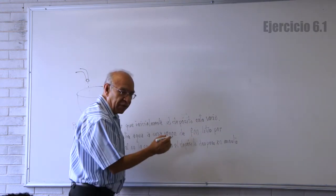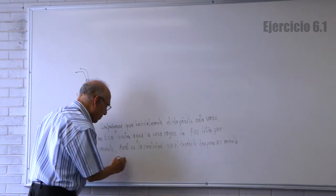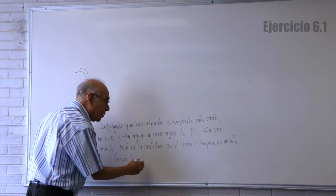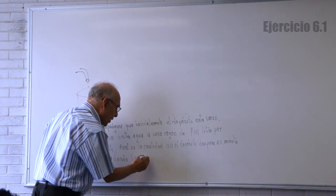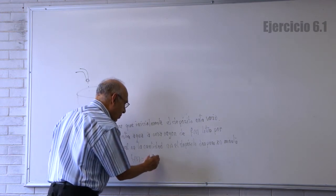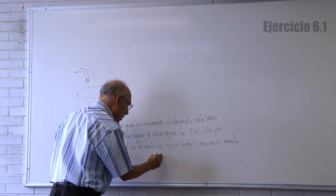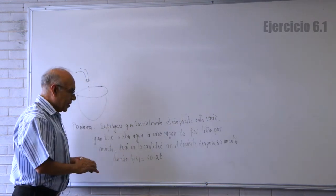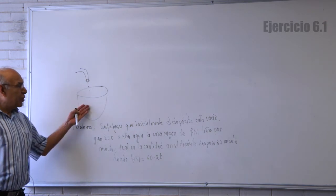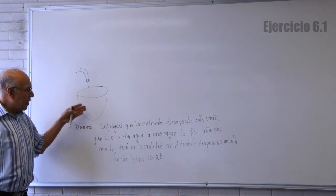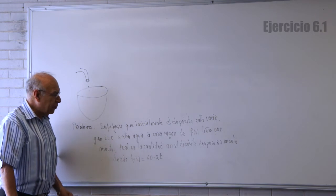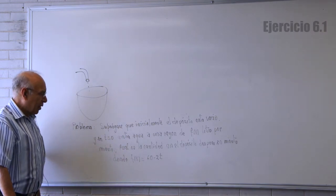Vamos a darle una expresión a F de T para no hacerlo tan general. Por ejemplo, F de T es igual a 60 menos 2T. Esa es la rapidez con la que se está llenando el depósito. Está dada en este caso por la función 60 menos 2T, litros por minuto.